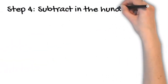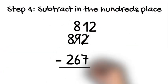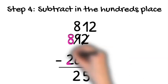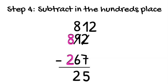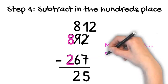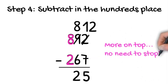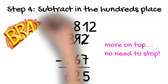Now we're ready for step 4. Subtract in the hundreds place. So now, we have 8 take away 2. More on top, more on the floor. You're right, it's more on top. 8 take away 2 is 6. Bravo! Our answer is 625.